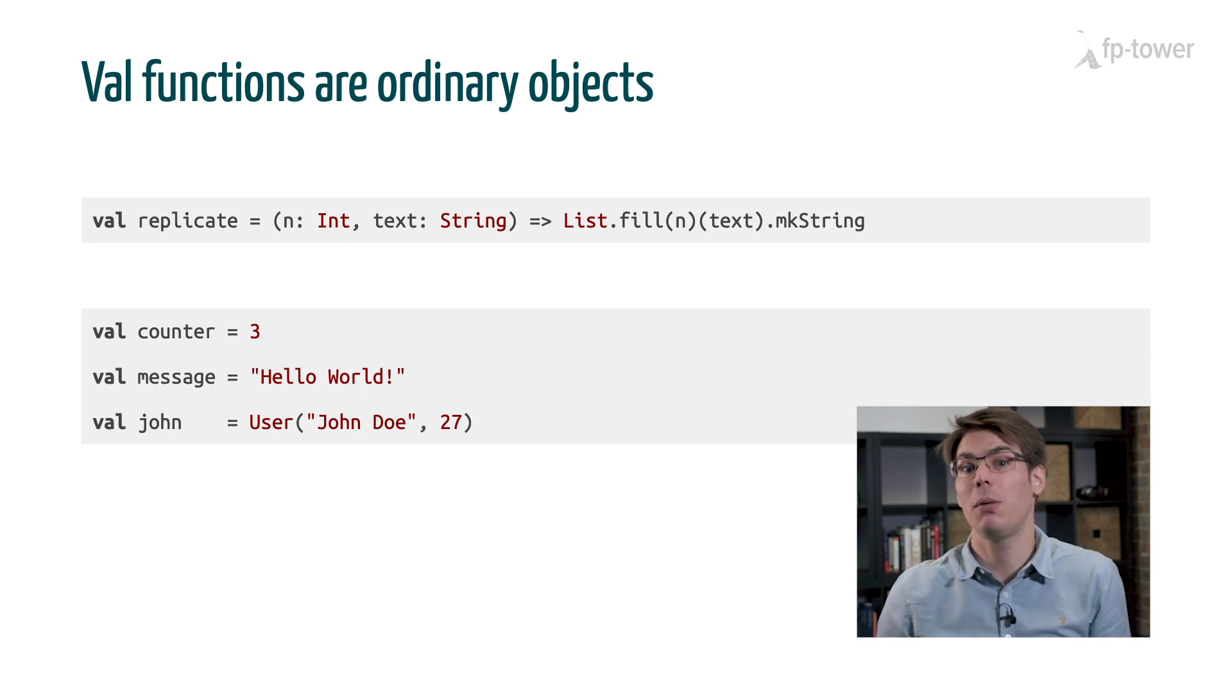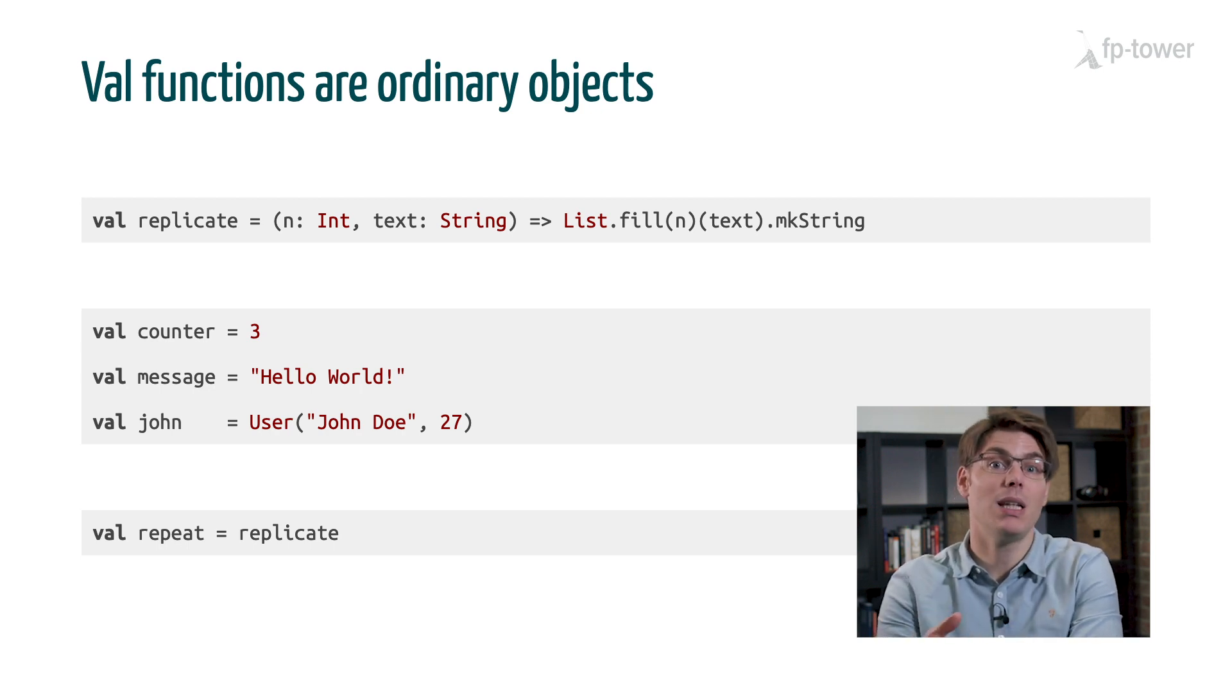Similarly, if we wanted to give replicate another name, such as repeat, we would do it in exactly the same way we would alias an int. We would say val repeat equals replicate, meaning that both repeat and replicate share the same object, which is the anonymous function we previously defined.